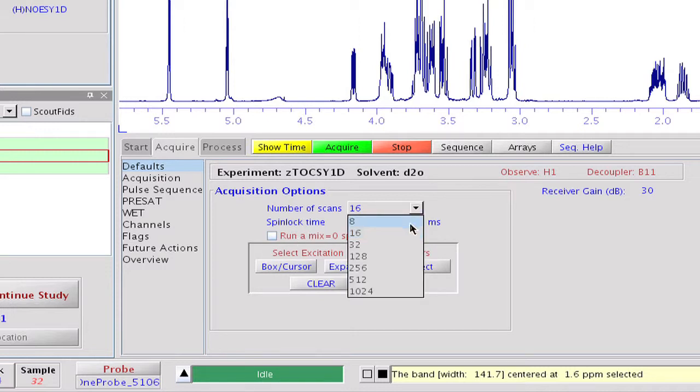Last, we define eight scans for each FID. We want to be quick, and select either a single mixing time or a mixing time array. A 150 millisecond long mixing period may allow the magnetization to be relayed over the entire spin systems.